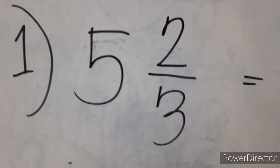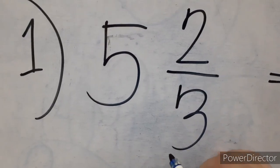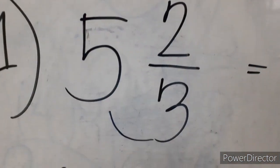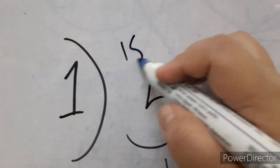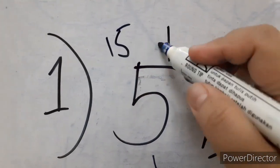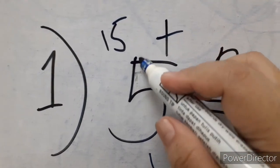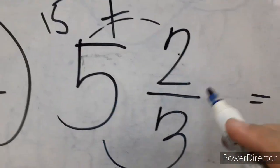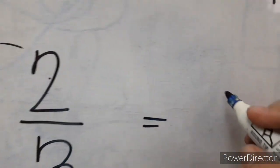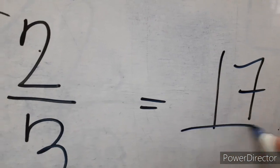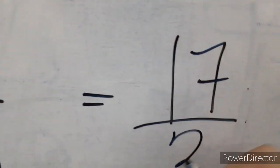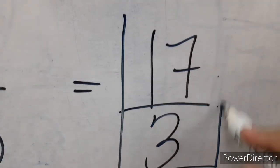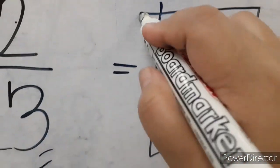With 5 and 2 thirds, we simply have to multiply. 5 times 3 is 15. Now add: 15 plus 2 is 17. Our new numerator is 17. And we simply have to copy the denominator, which is 3. So the answer is 17 thirds.